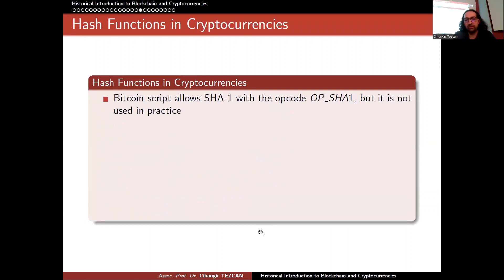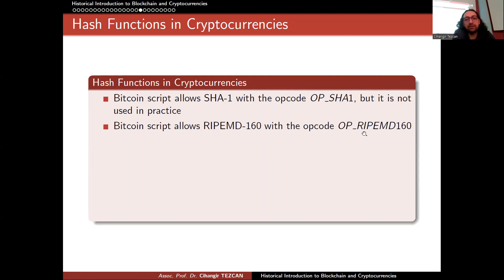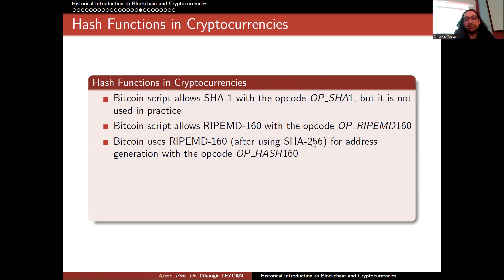Bitcoin script allows SHA-1, RIPEMD-160, and SHA-256, but SHA-1 is almost never used in any Bitcoin transactions — it is included in the op codes but I have never seen a transaction that uses it, because RIPEMD-160 is secure and has the same output size. Bitcoin script allows RIPEMD-160 with its op code, and also allows Hash160, which first hashes the input with SHA-256 and then hashes the output with RIPEMD-160. These two op codes are different.